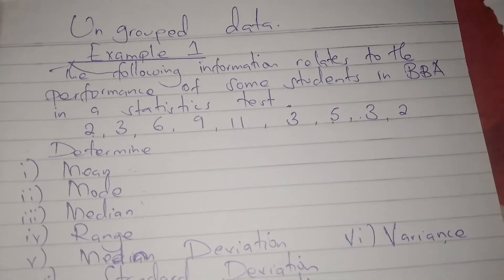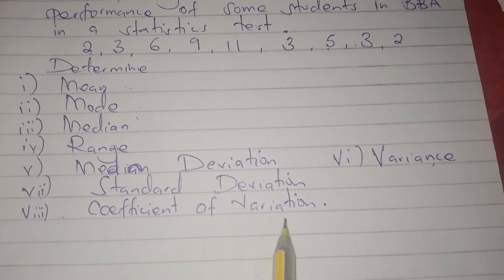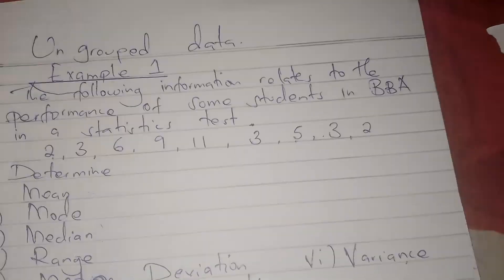We shall be concluding ungrouped data. The thing we haven't calculated for is the coefficient of variation. So we are going to look at it.